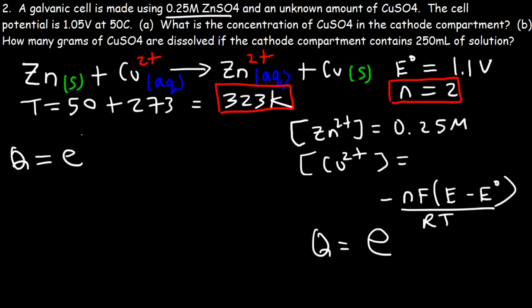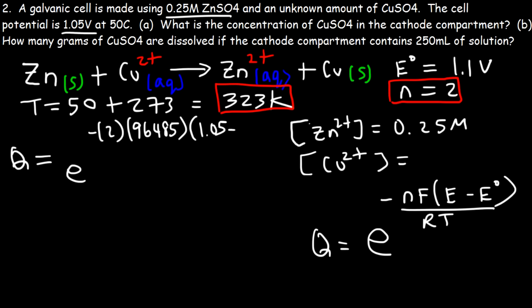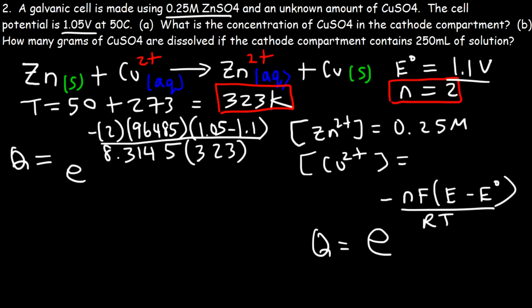Plugging in the values: N = 2, F = 96,485, E = 1.05, E° = 1.10, R = 8.3145, T = 323 Kelvin. Computing e raised to [−2 × 96,485 × (1.05 − 1.10) / (8.3145 × 323)] gives Q = 36.33.